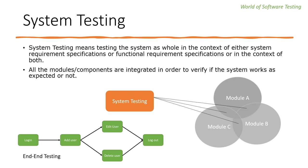Let's understand with an example. If an application has three modules — Module A, Module B, and Module C — and we are combining them as A+B, B+C, or A+C and then testing, that testing is called integration testing. When we integrate all three modules together and test the complete system, that is called system testing.